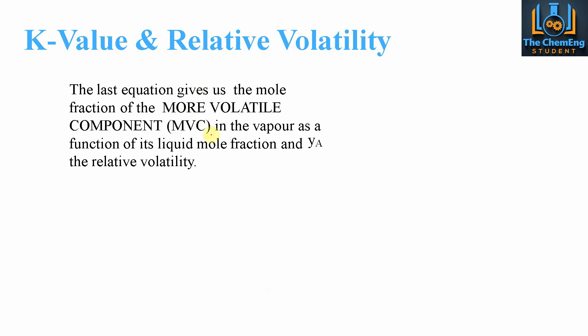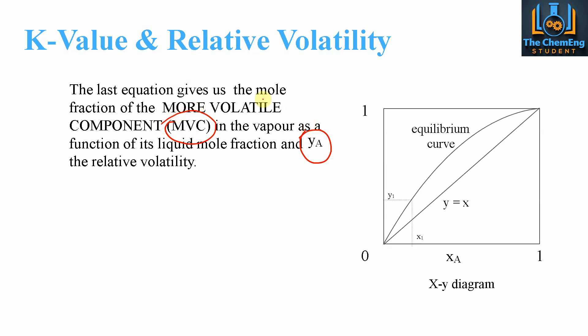The last equation gives us the mole fraction for the more volatile component, abbreviated as the MVC. You will see this in distillation courses and at university. The vapor mole fraction y is a function of the liquid mole fraction x and the relative volatility alpha.